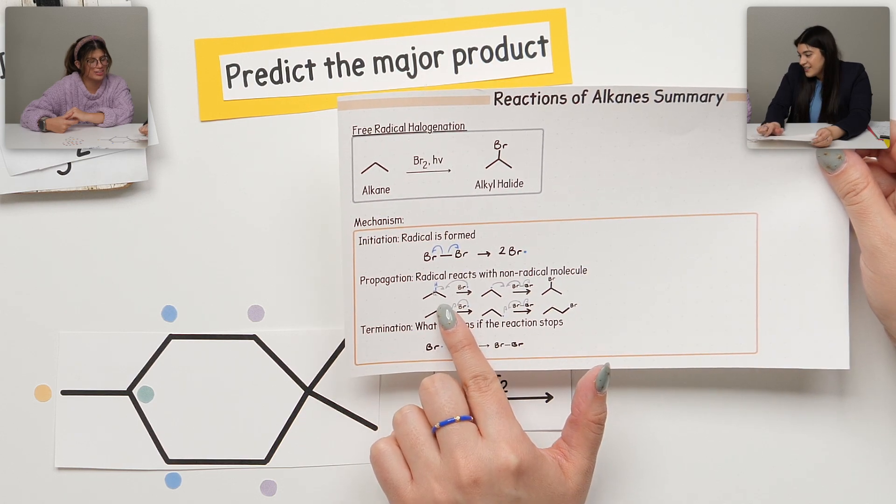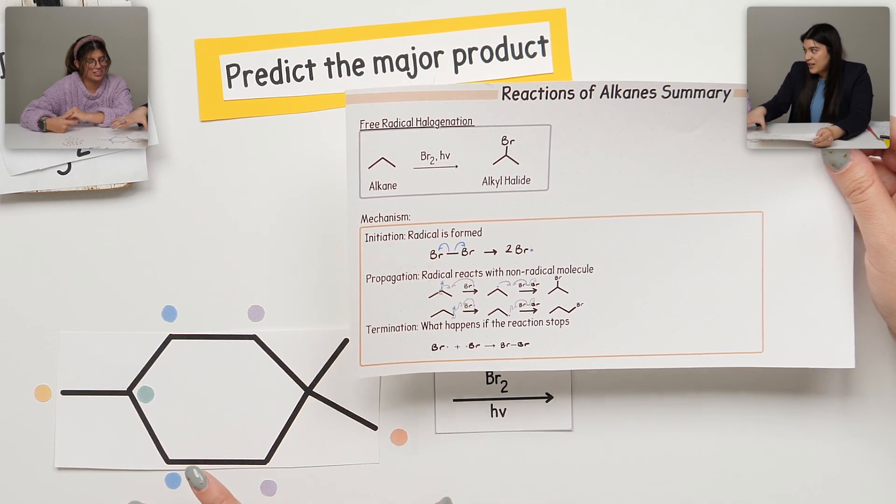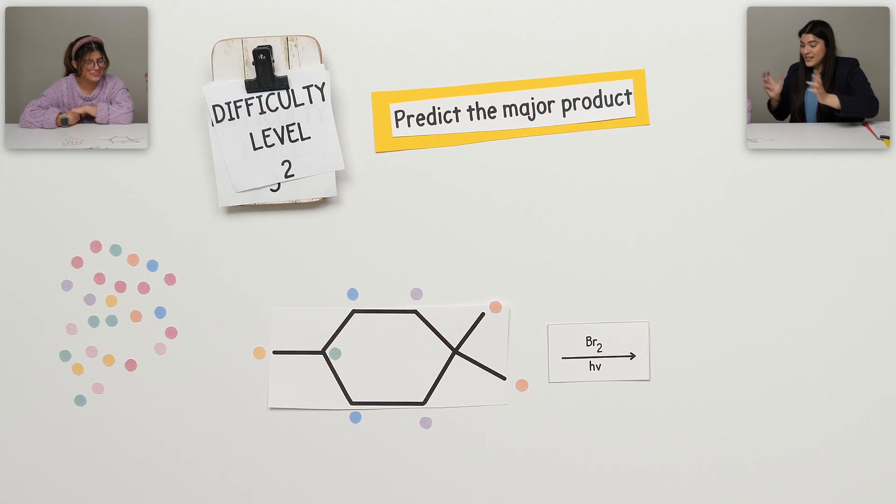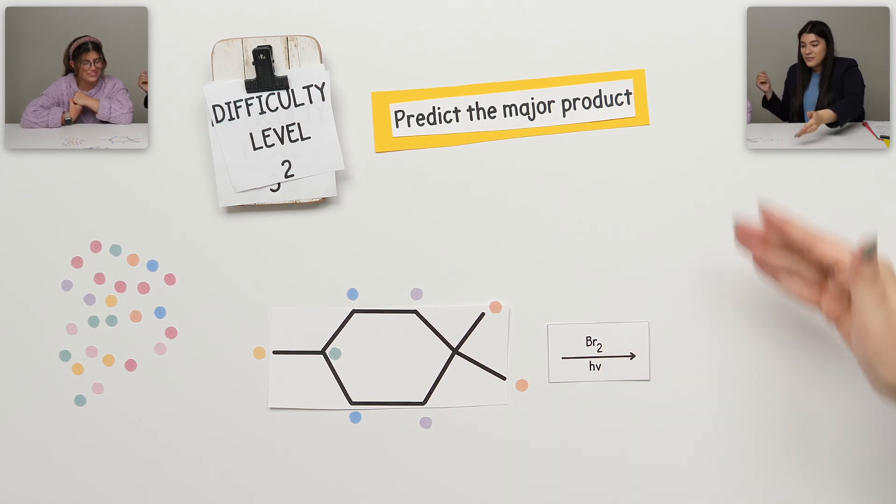Great! I love that you got that right so far. Next, what is potentially going to be the major product? Which radical would we pick? I would say this one. Why? Because it has the tertiary. Beautiful!